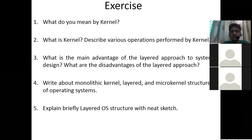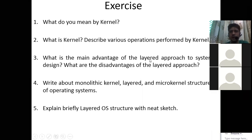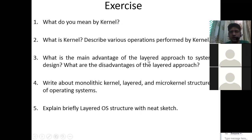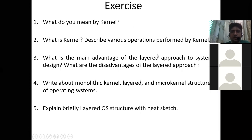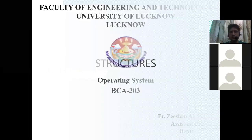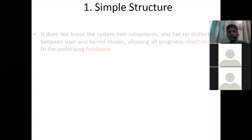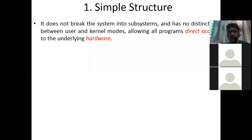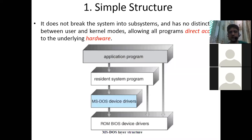These are the different types of structure of operating systems. Some important exam questions include: What do you mean by kernel? Describe various operations performed by the kernel. What is the main advantage of the layered approach to system design? What are the disadvantages of the layered approach? Similar questions can be framed for microkernels. Write about monolithic kernel, layered, and microkernel structures of operating systems, and explain briefly the layered operating system with neat diagrams.